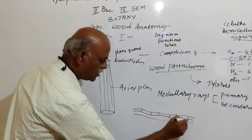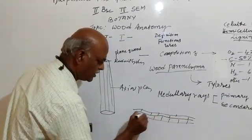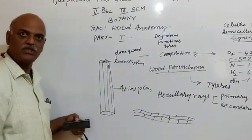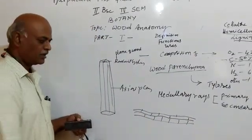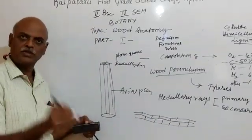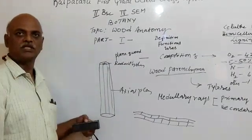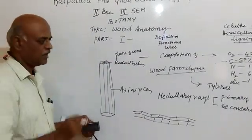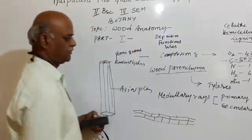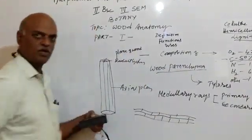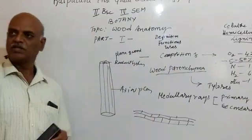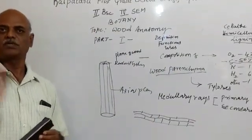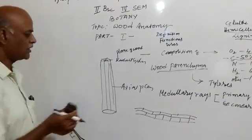The parenchyma cells are embedded in the tissue in between the xylem elements. They run from pith to the endodermal region. The wood parenchyma exhibits a special type of structure.